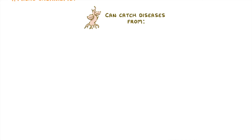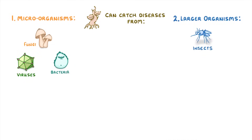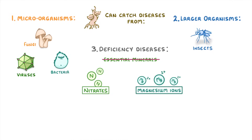Just like humans, plants can catch diseases from a range of microorganisms, including fungi, bacteria, and viruses, but also from larger organisms like insects. They can also get deficiency diseases, which can happen if they don't get enough essential minerals like nitrates or magnesium ions.